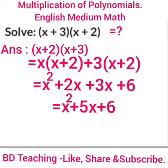Now we will learn the same multiplication of (x + 3) with (x + 2) using the row-wise method. First, we multiply x with (x + 2), then 3 multiplied with (x + 2). So x times x gives x², x times 2 gives 2x, 3 times x gives 3x, and 3 times 2 gives 6. The result is x² + 5x + 6.